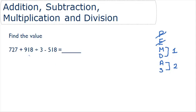Now let's look at our problem. Here we have 727 plus 918 divided by 3 minus 518. Looking back at our order of operations, we see that we can cross out one more of our letters. There's no multiplication in this problem.